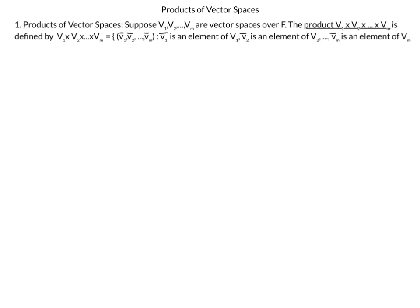The definition of a product of vector spaces: suppose we have vector spaces V1, V2 up to Vm over some field F. Then the product V1 cross V2 cross up to Vm is defined by the m-tuple of vectors, where the first vector comes from V1, the second vector V2 comes from V2, the i-th vector comes from the i-th vector space, and finally Vm comes from the m-th vector space Vm.